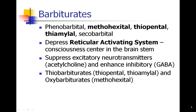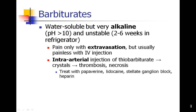Barbiturates are classically broken down into two subcategories: thiobarbiturates, which are sulfur-containing drugs like thiopental and thiamylal, and oxybarbiturates like methohexital. These drugs are very water-soluble but very alkaline — the pH is greater than 10 — and they're pretty unstable in the refrigerator, so often they have to be prepared from a powdered solution and reconstituted prior to use.